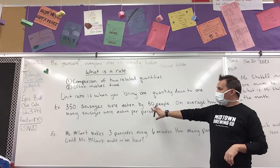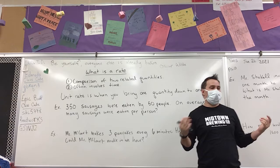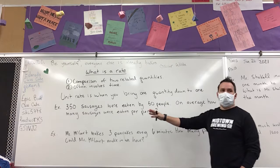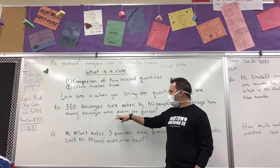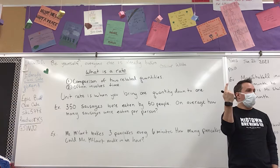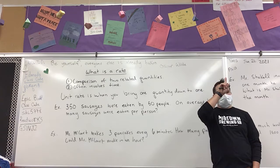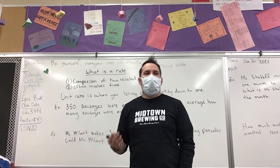So we think about it like this. Question one: 350 sausages were eaten by 50 people. So we have a big breakfast — 50 people coming to the breakfast. We got pancakes, we got bacon. We're just looking at the sausage. We had 350 sausages, they all got eaten, 50 people were there. On average, how many sausages were eaten per person? So we're taking it to a unit rate per one person. How are we going to find the unit rate? How many sausages was just one person eating on average?